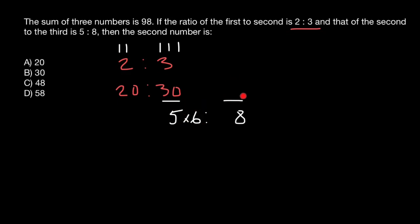In order to find the third number, we also have to multiply 8 by 6. So if we multiply 8 by 6, we get 48. So here is our ratio.